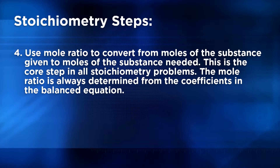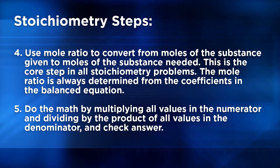Next, we'll always have a mole ratio step in every single stoichiometry problem that we do. Step 4 is to use the mole ratio to convert from moles of the substance given to moles of the substance needed. This is a core step in all stoichiometry problems, and this mole ratio is always determined from the coefficients in the balanced equation. Finally, do the math by multiplying all values in the numerator and dividing by the product of all values in the denominator, and check your answer.